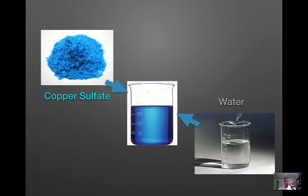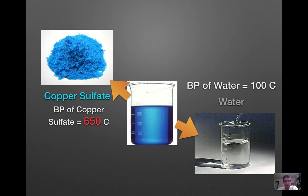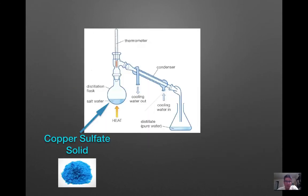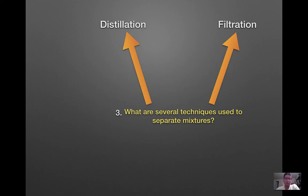To revisit: you start with water and copper sulfate mixed together as a homogeneous solution. Distillation does the reverse — it separates the two constituent substances back into copper sulfate and water, using the difference in boiling points. What's left in the distillation flask is the copper sulfate solid, and in the Erlenmeyer flask you're left with pure water, completely separate from the copper sulfate.